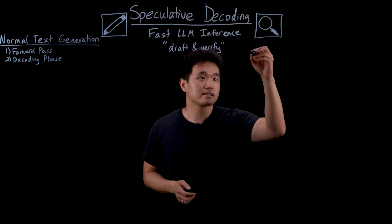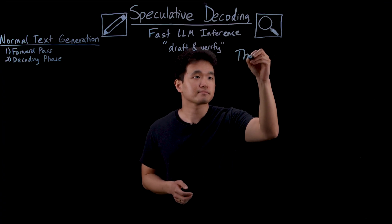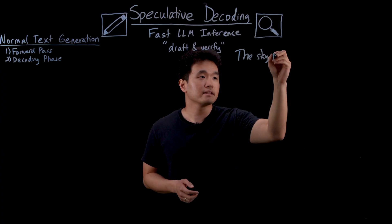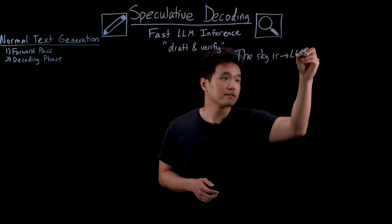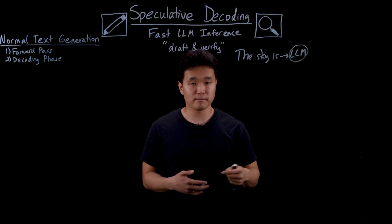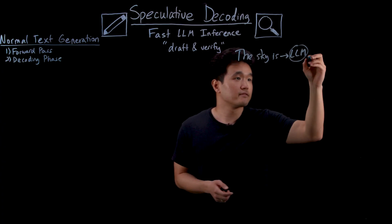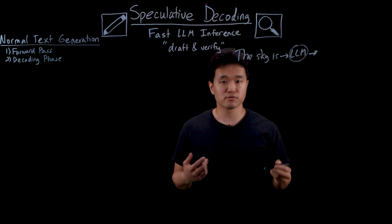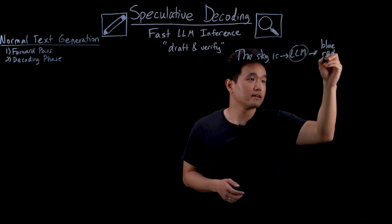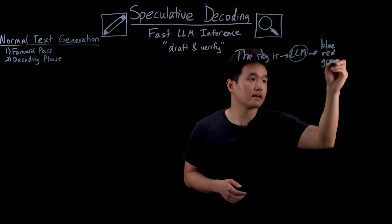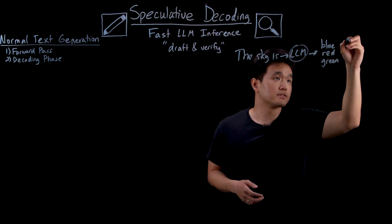Let's take the input the sky is. During the forward pass, this text is tokenized and passed through the LLM layers being transformed by the model weight parameters and eventually outputting a list of potential tokens. Let's say blue, red, green, etc. along with its probability distribution.